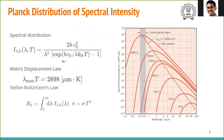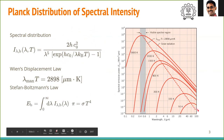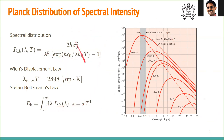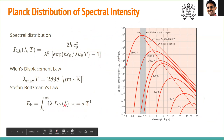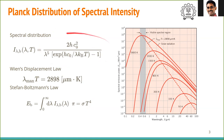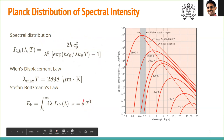You can also integrate the Planck distribution over the entire wavelength range and get the area under the curve, which has units of watts per meter squared. That gives the famous Stefan-Boltzmann law: sigma T to the fourth power. This integral can be evaluated straightforwardly to give sigma T⁴, which is the total emissive power of a blackbody integrated over all wavelengths.